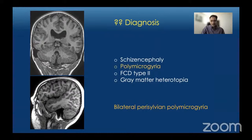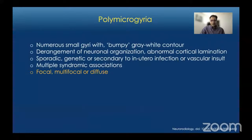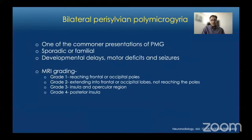Polymicrogyria is characterized by numerous small gyri with a bumpy appearance of the gray-white contour. It is caused by derangement of neuronal organization and abnormal cortical lamination. It can be sporadic, genetic, or associated with in utero infection or vascular insults. Bilateral perisylvian polymicrogyria is one of the common presentations and can be sporadic or familial. There is an MR grading system: Grade 1 is most severe with perisylvian involvement extending to frontal or occipital poles; Grade 2 extends into those lobes but not the poles; Grade 3 is purely insular and opercular; Grade 4 involves only the posterior insula bilaterally.